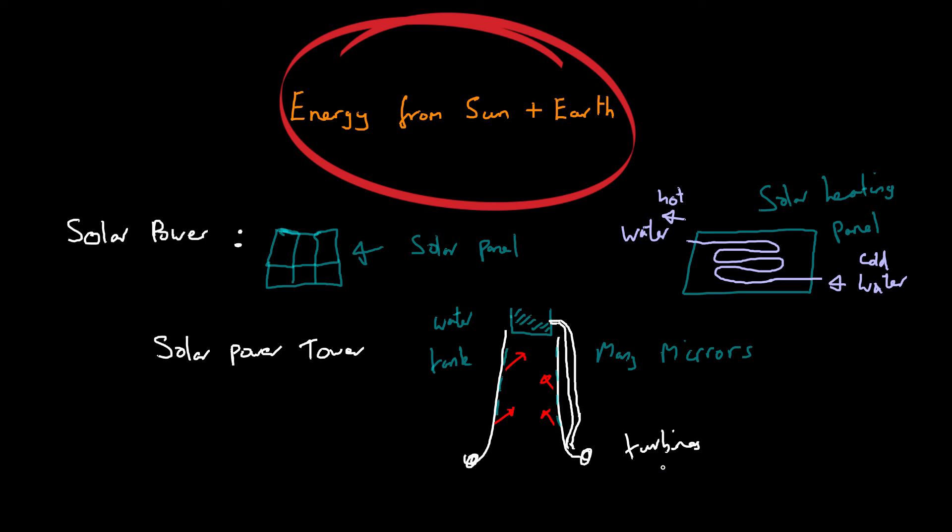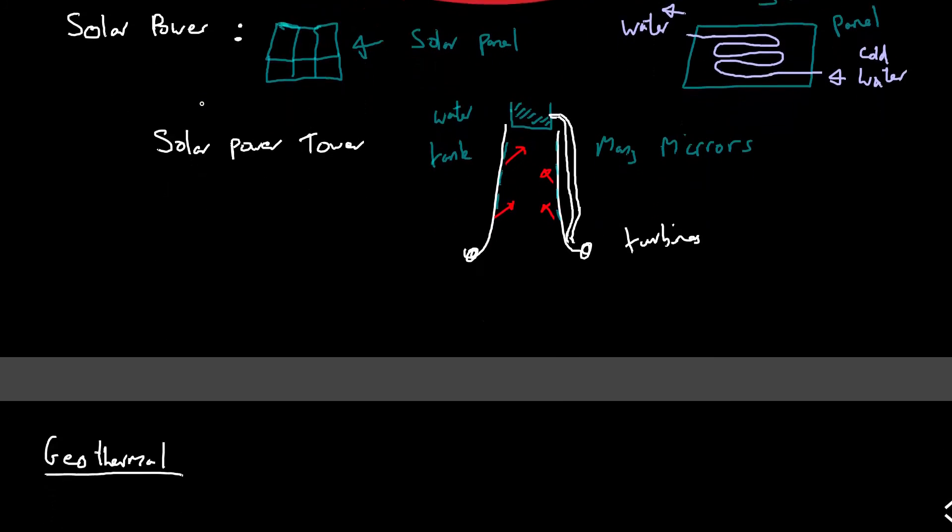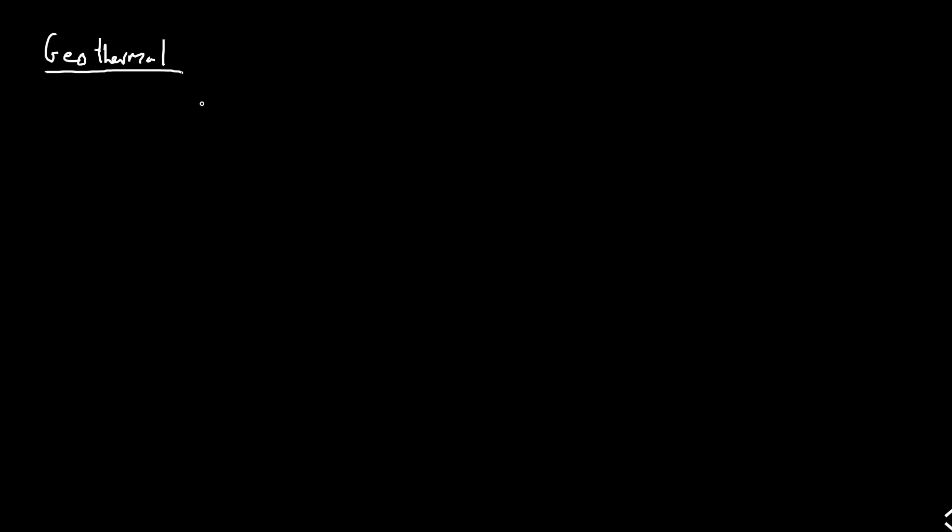Turbines, of course, coupled to a generator and that allows electricity to be produced. Okay. This is a very clever method and it can actually produce a hell of a lot of electricity depending on where these towers are placed. Okay. So the last method I want to look at is geothermal. So we use geothermal energy in order to produce electricity.